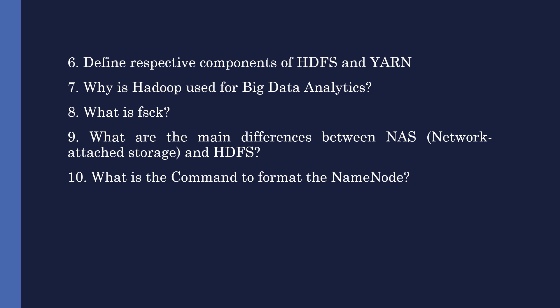The next question is: what are the main differences between NAS (network attached storage) and HDFS? HDFS runs on a cluster of machines while NAS works on individual machines. During hardware failure, HDFS is a better option since data is distributed across commodity hardware rather than a single machine as with NAS. Additionally, data is stored as data blocks in local drives in HDFS, whereas in NAS it is stored on dedicated hardware.